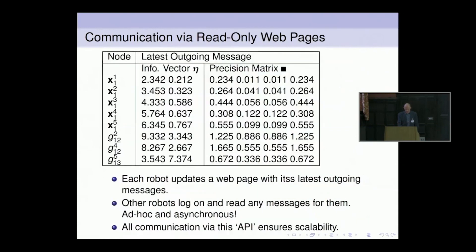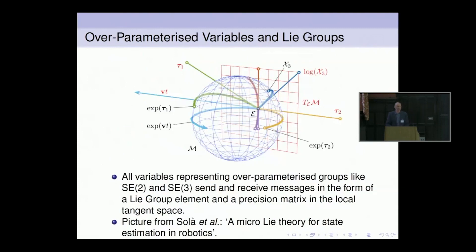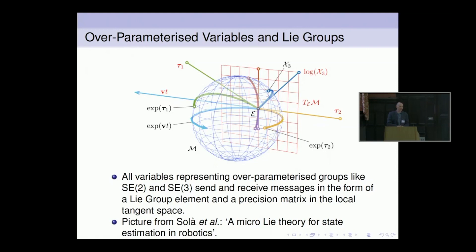There is something that makes it somewhat more complicated, but we think there's a good solution. When variables represent rotations — 2D or 3D rotations represented with rotation matrices — we need to handle those properly. We've come up with a way of dealing with over-parameterized variables using Lie group theory. The basic idea is that every message involving a Lie group variable includes the group element and the precision matrix in the tangent space of that group element. You're still sending small messages, but you have to be careful how you use them. This is based on an excellent tutorial on Lie groups by Joan Solà et al., which we highly recommend.